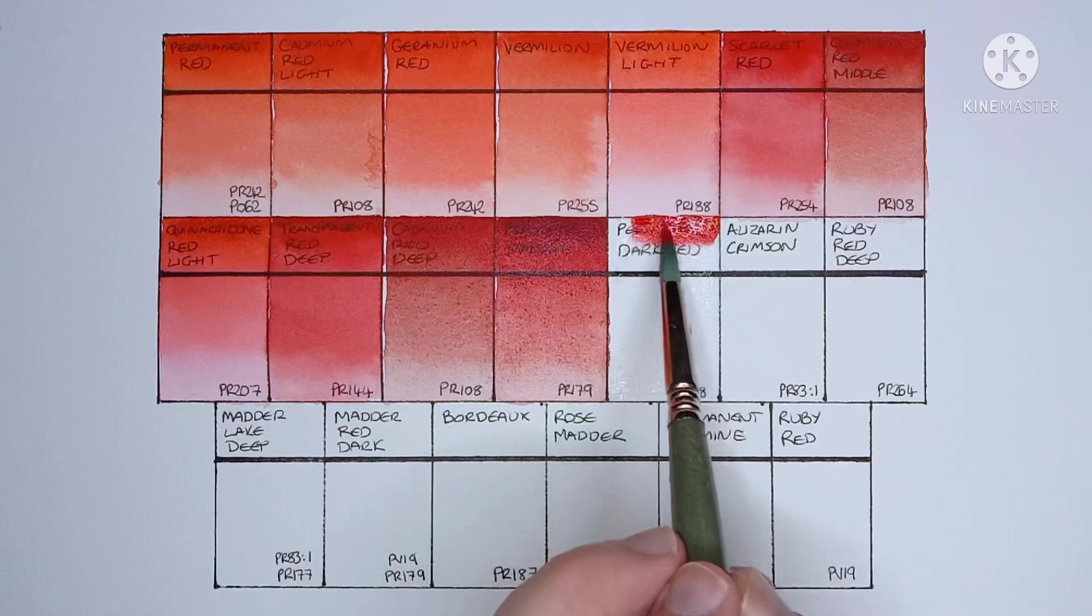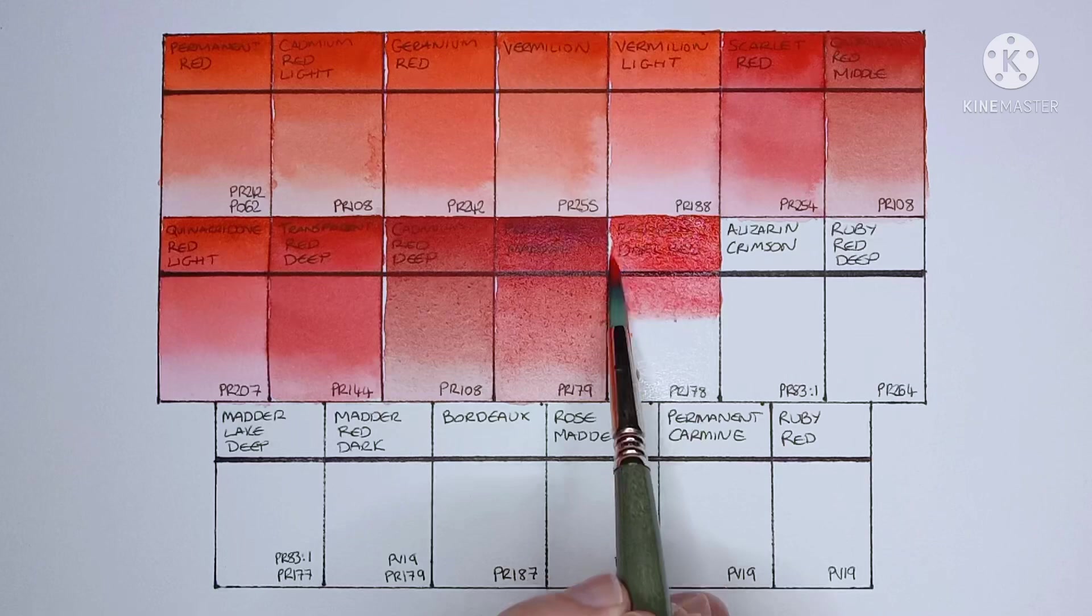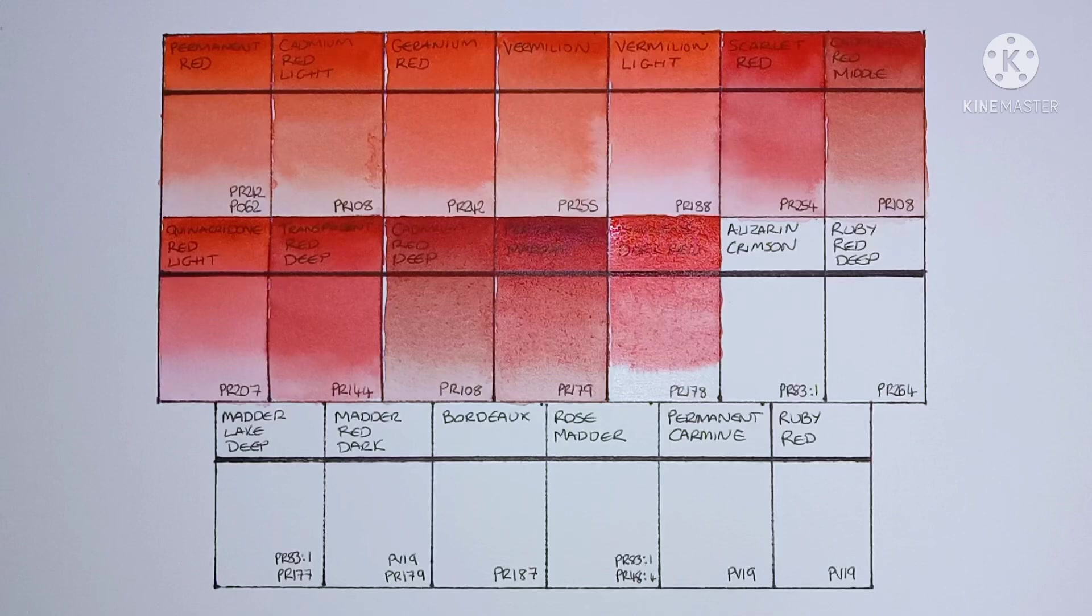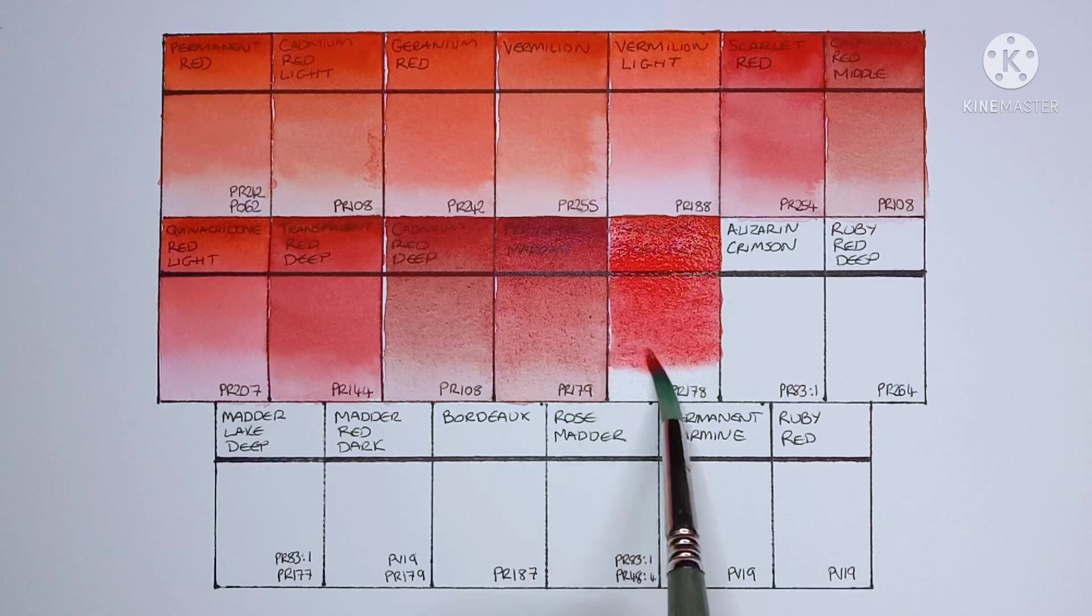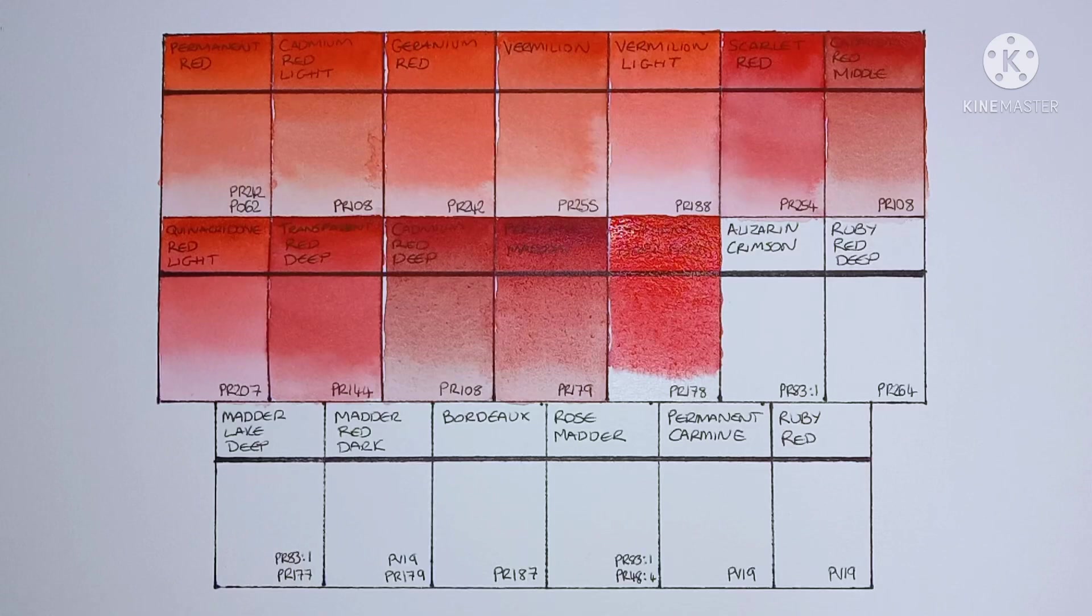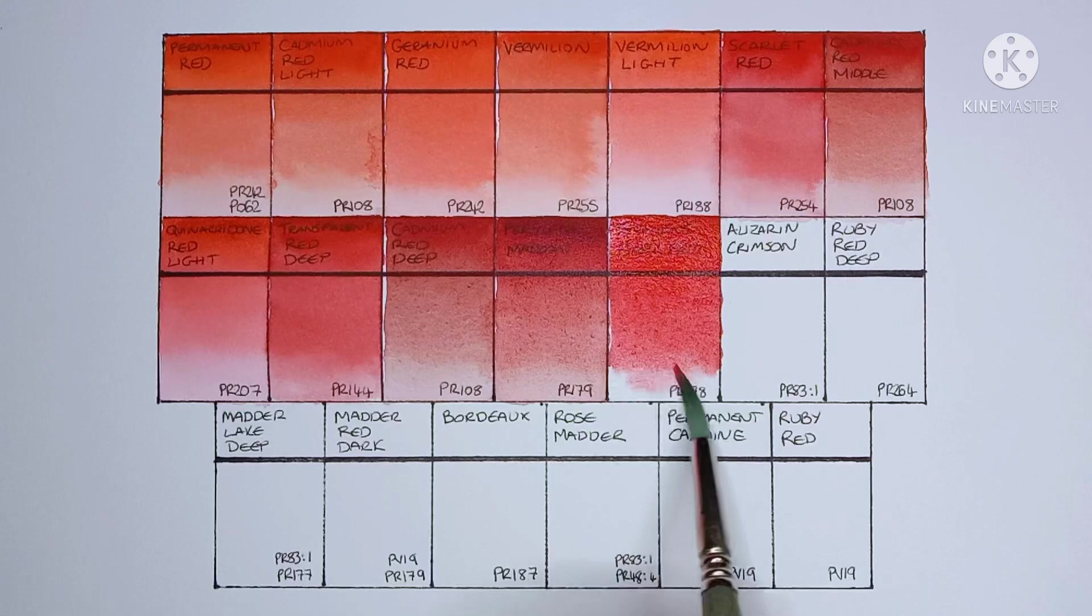Next we have perylene dark red, which is PR178. So I think this is another new pigment to me. I don't think I've tried a PR178 before. Yeah, it's quite nice. Again, I'd say I prefer it to the quin red light, but I'm not sure how useful it would be to me.